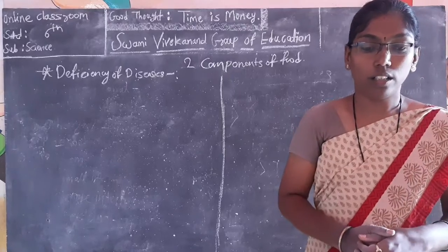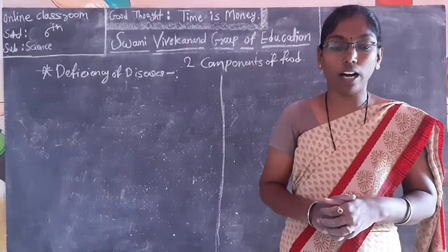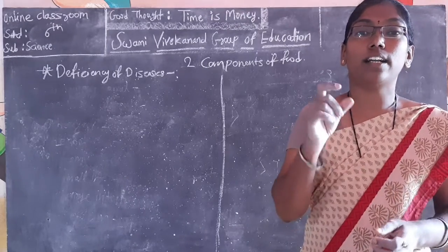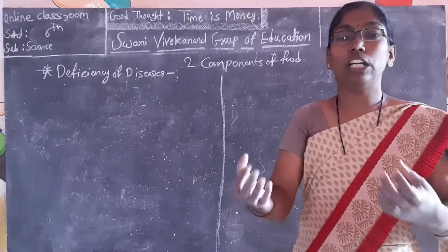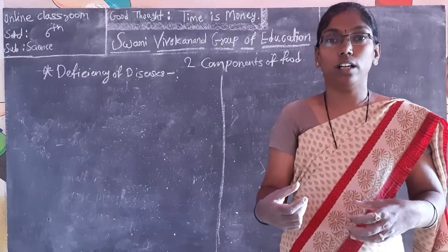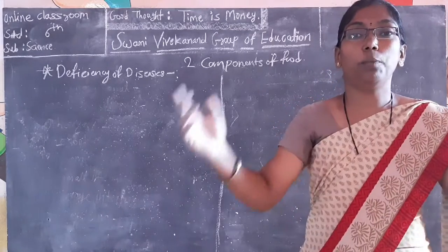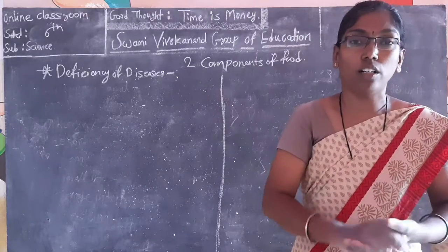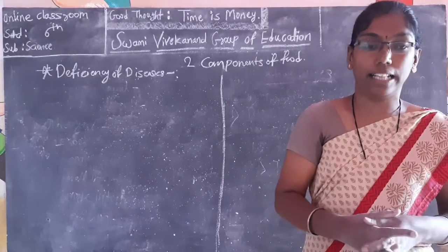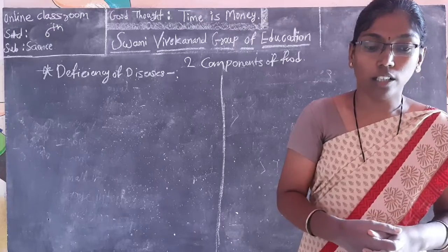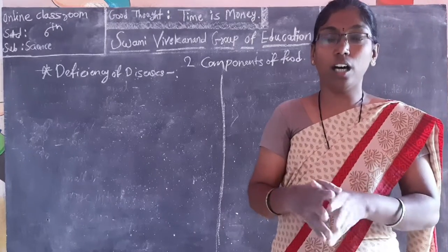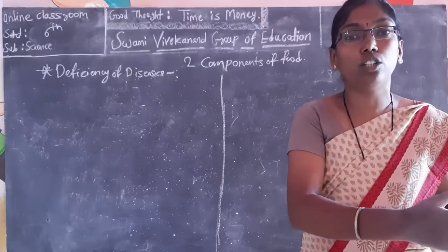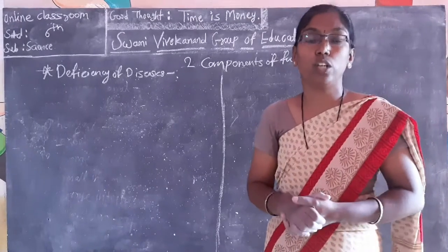Deficiency means what? Our body does not require all nutrients in maximum amounts, but we require them in the right proportion. We eat food and we get all the nutrients — not 100% of all food, not 100% of every nutrient. What we want is a proper proportion of food and a proper proportion of nutrients.